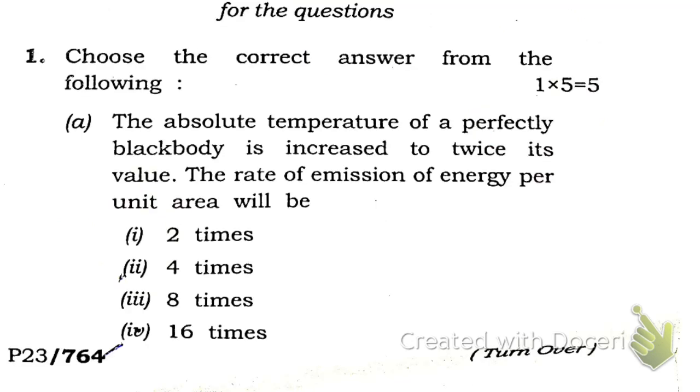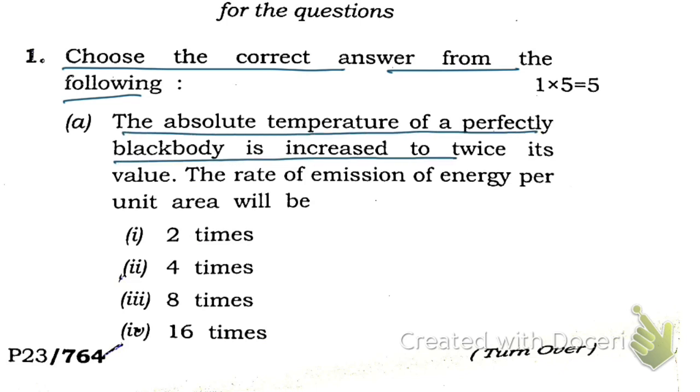Now let's start. Here is the first question: choose the correct answer from the following. The absolute temperature of a perfectly black body is increased to twice its value. The rate of emission of energy per unit area will be: